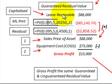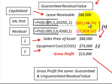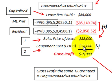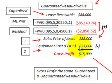Under the guaranteed residual value, the capitalized amount — the lease receivable — is $88,000. We take the discounted minimum lease payments of $85,140 plus the discounted residual value of $2,858, which together give us a sales price of $88,000. The given equipment cost, or cost of goods sold, is $73,000. So the gross profit is $88,000 minus $73,000, giving us a gross profit of $15,000.